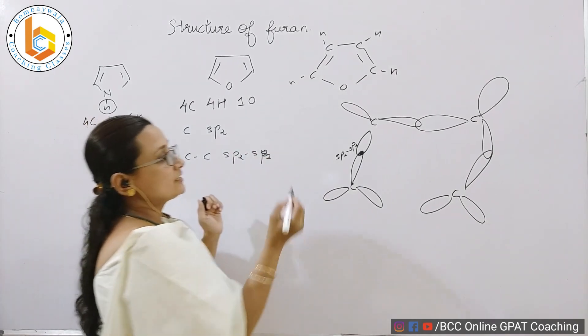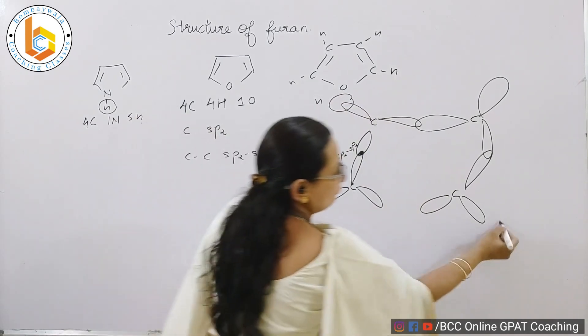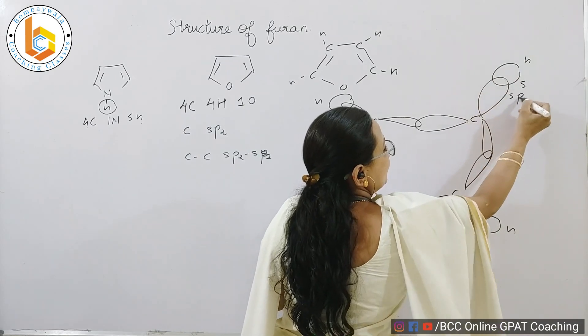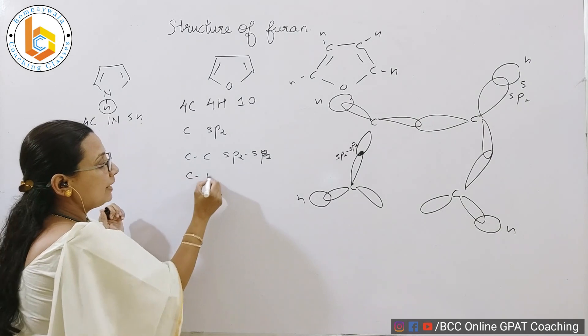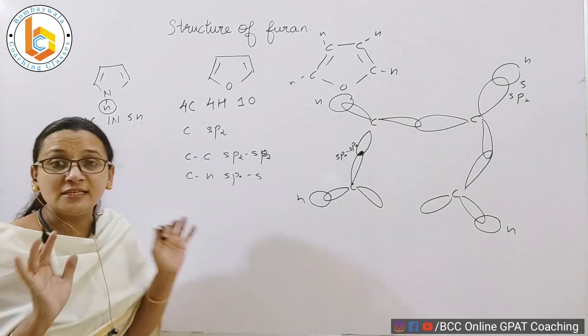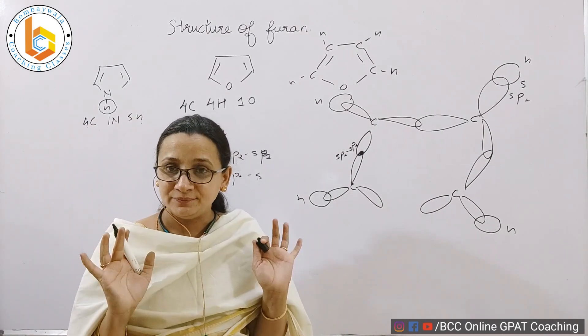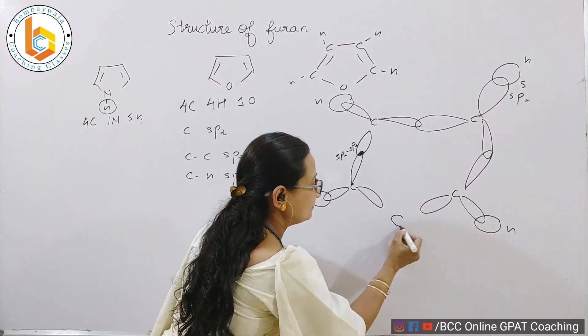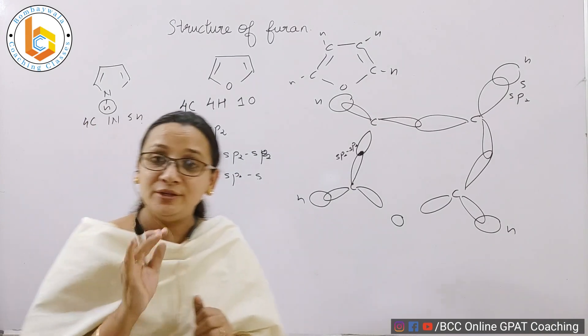Each of these carbons is bound to a hydrogen by sp2-s overlap. So the carbon-hydrogen bond is sp2-s overlap. This is exactly the same as what happens in benzene. What is different is your oxygen.